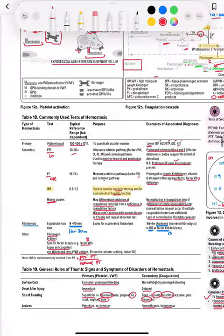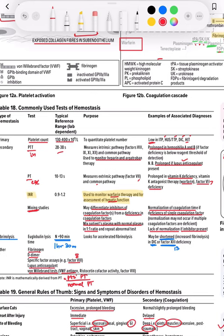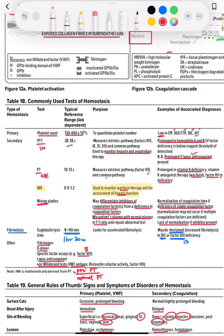There's a fourth test, which is mixing studies. We mix the patient's plasma one-to-one with normal plasma, and we can differentiate if there's inhibition of coagulation factors or a deficiency. If the coagulation time gets normalized when we mix it, then there must be a deficiency of a single coagulation factor. But if it's still not normal, there is some kind of inhibitor present. Normalization may not occur if multiple coagulation factors are deficient. When the patient's plasma lacks a coagulation factor and we mix it with normal plasma, the coagulation factor is provided and the coagulation time normalizes.